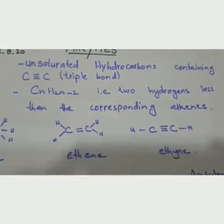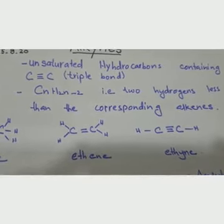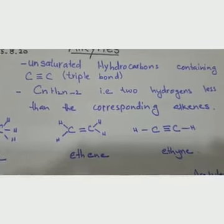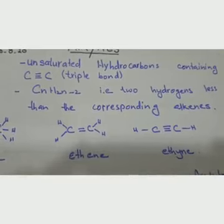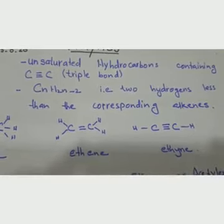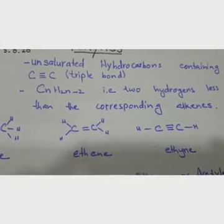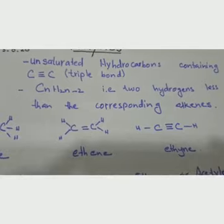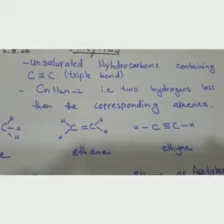Each carbon has to make 4 bonds in total. Here there are 3 carbon-carbon bonds, leaving fewer bonds available for hydrogen.